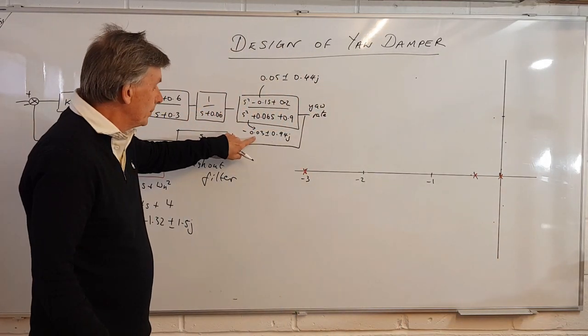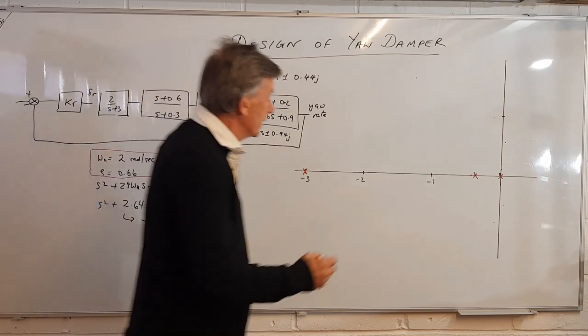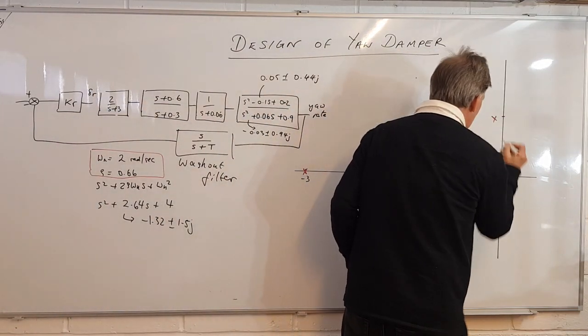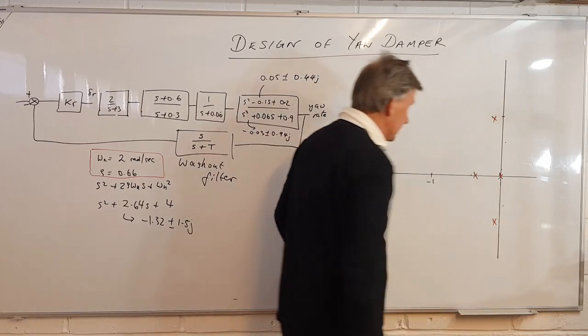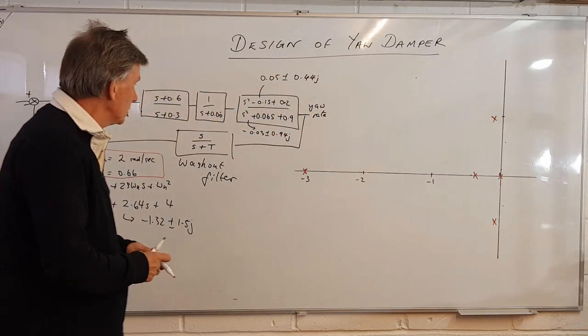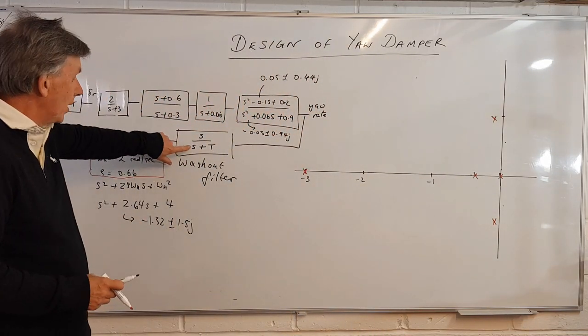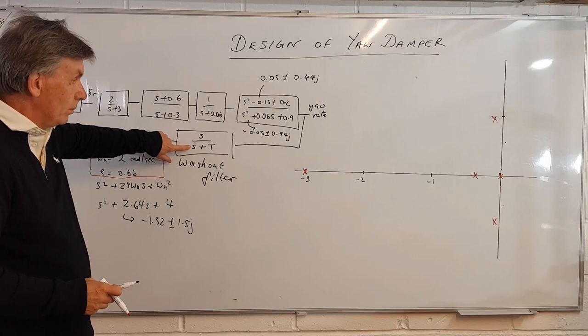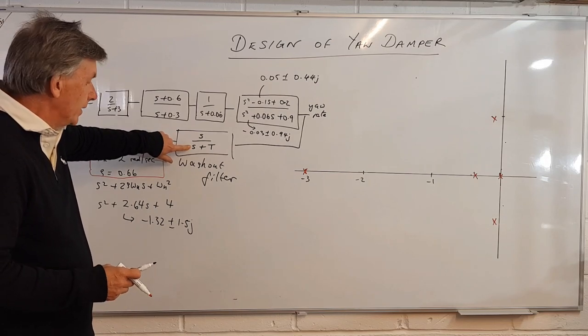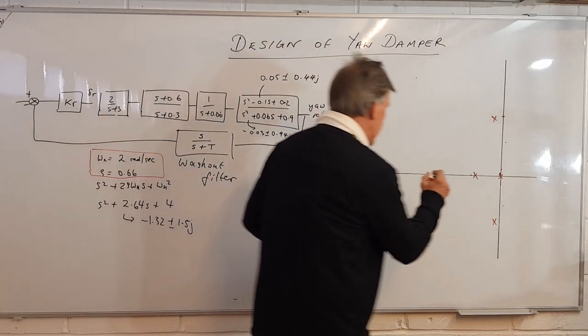And we've got a couple of poles at minus 0.13 plus 0.94, so we've got a couple of poles there and there. There's our poles, and there's also another pole associated with the minus one over t, and we don't know where that is, so we can put that somewhere down here.